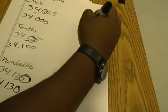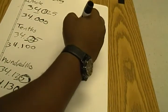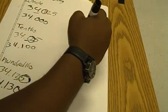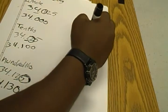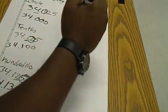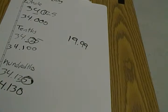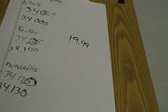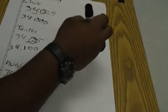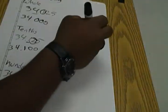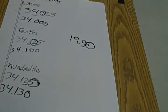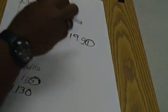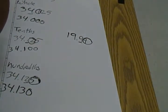One last example. Let's say we have 19.98 and they want us to round to the tenths place. The digit to the right tells us which way to go. That nine is greater, so five or greater, see you later.